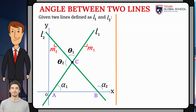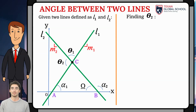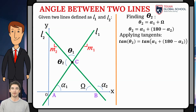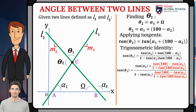Similarly, for the triangle ABC, the angle of two lines theta2 is the exterior angle of the triangle, which is equal to the sum of its opposite interior angles. So theta2 is equivalent to the sum of alpha1 with omega. Since they are supplementary angles, theta2 is equivalent to the sum of alpha1 with the difference between 180 and alpha2. Applying tangents to both members and using the same trigonometric identity, we obtain the equation shown, in which by exact values, the tangent of 180 degrees is 0.